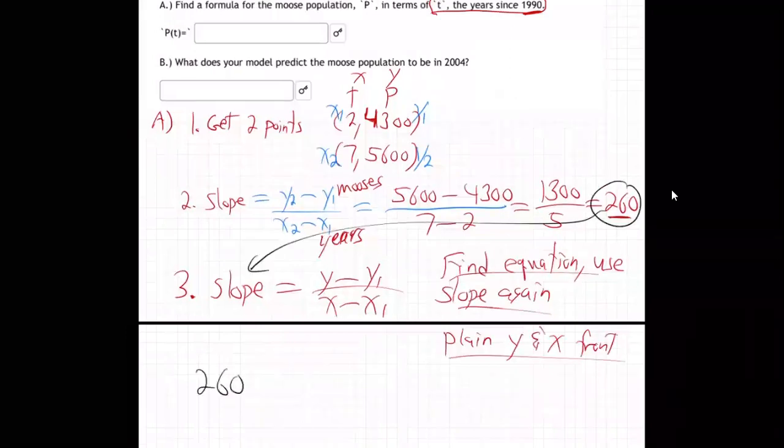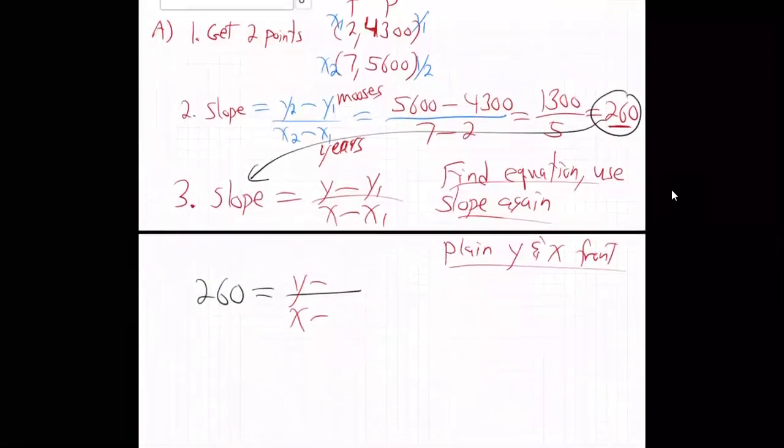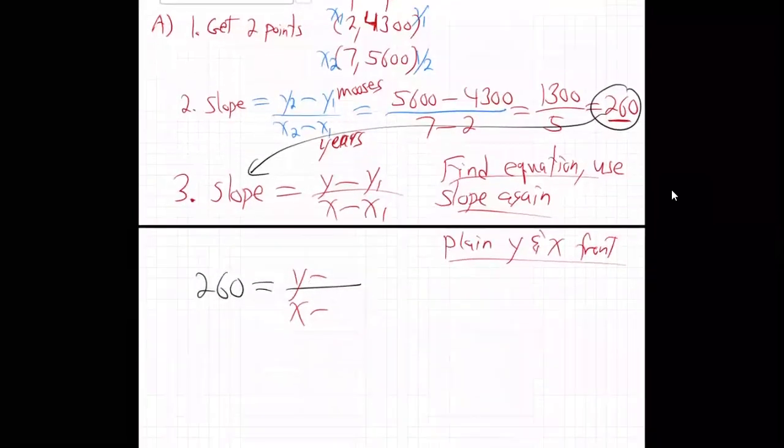Grab that 260 slope. Pop it in. 260. Y minus over X minus. Okay. What's the Y1, X1? We've got those, right? Here's X1, 2. There's Y1, 4,300. Plug those in.